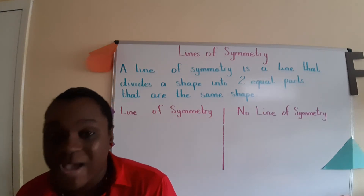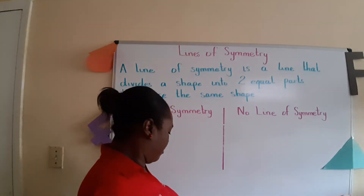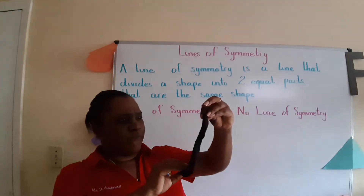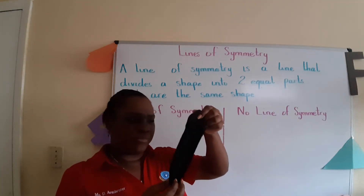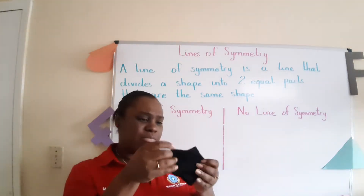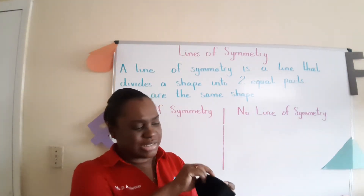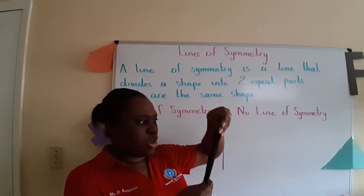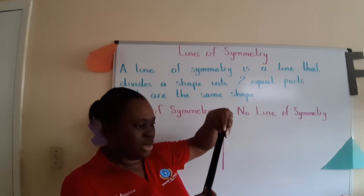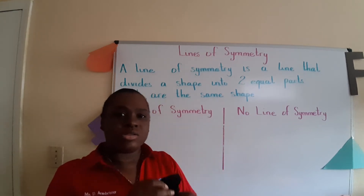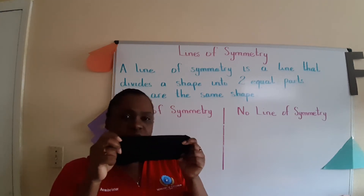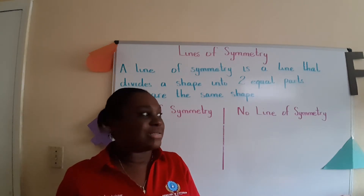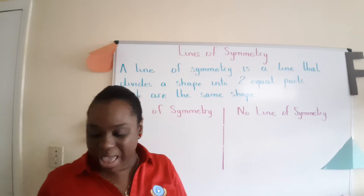Did anyone find a sock? I found one, but I'm not sure if there's a line of symmetry here. Let me try and fold it this way — the sides don't match that way. What about this way? The heel is still a little off. So a sock has no line of symmetry. Some shapes have a line of symmetry and some would not have a line of symmetry.